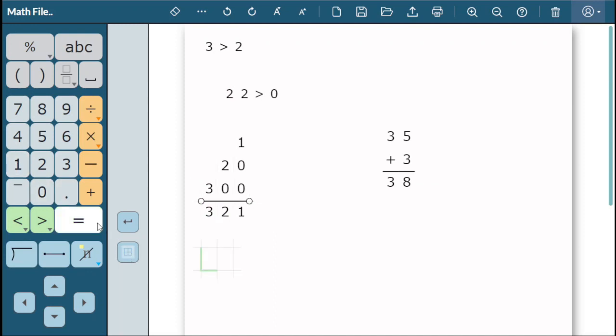Access alternate math symbols contained within math keys with triangles by pressing the key for one second, then clicking on a symbol to select it. To hide the drop-down without selecting anything, click on the gray bar or another key.